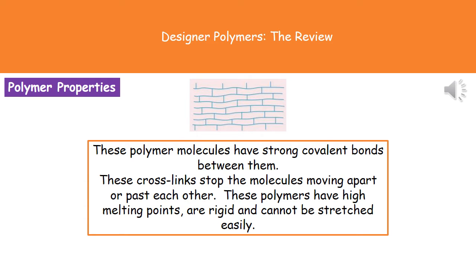The second type of polymer has a different structure. If you look at the diagram it almost looks like a brick wall, because we've got strong covalent bonds forming crosslinks between the individual polymer molecules. Because of these crosslinks, if you pull on the ends the molecules can't slide past each other, so they won't stretch easily and they have a very rigid shape. Because we've got strong covalent bonds, a lot of energy is needed to break those bonds, which gives the polymer a high melting point.